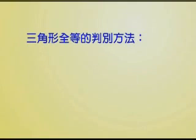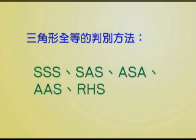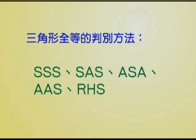重点回顾：大家还记得我们在这几次的课程中学到什么吗？我们学到了如何判定三角形的全等性质。关于三角形的全等性质，有下列五种，分别是SSS、SAS、ASA、AAS、RHS全等性质。